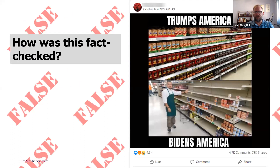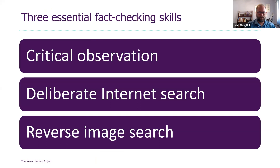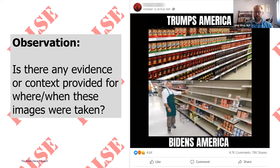Going back to this example — how did we determine it wasn't what it claimed to be? There are three skills I'm going to talk about this afternoon: observation skills, search strategies for using the internet, and a specialized search called a reverse image search.